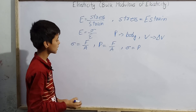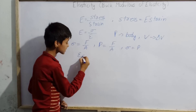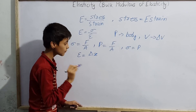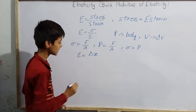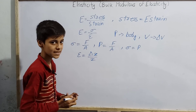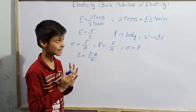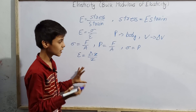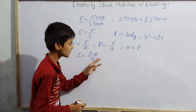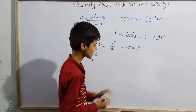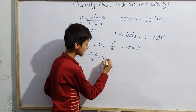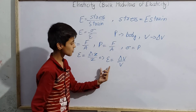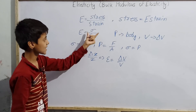Now what is the value of strain, epsilon? The general form for strain is delta x divided by x, where x can be length, volume, or other quantities. Here, since we are dealing with volume, x equals volume, so we can write epsilon equals delta V divided by V.